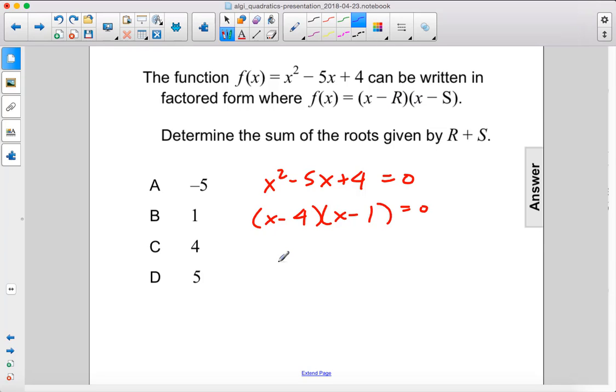So that means that r equals 4 and s equals 1. So when we add r plus s equals 5. D.